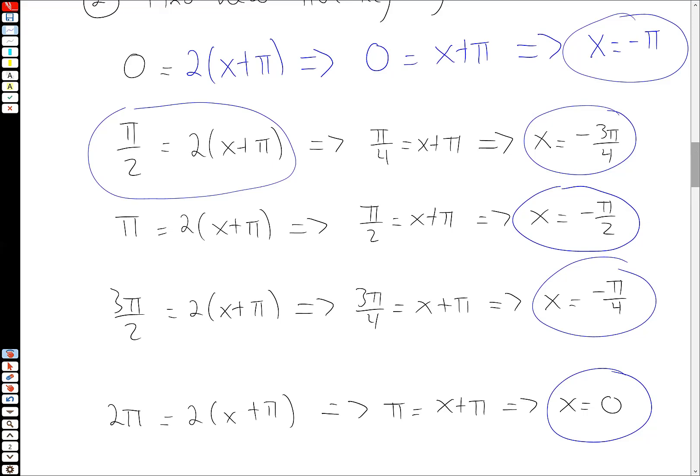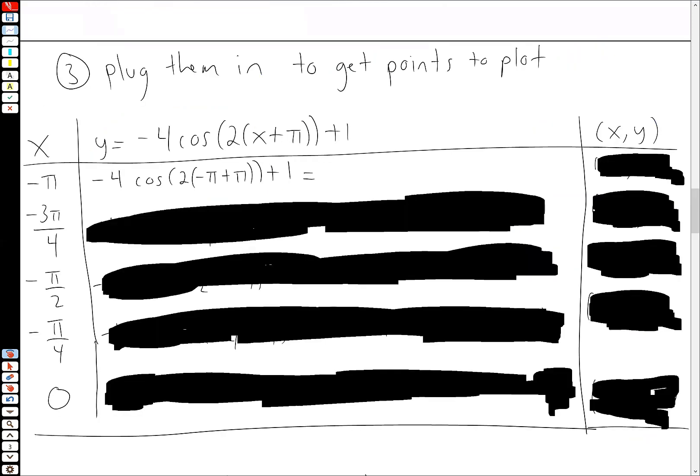So I set up a chart here for us on the very left, I have our new key angles. And then in the middle, we have the function that we're going to plug it into. And then on the right, we have the point that's going to be on the graph. So let's start by plugging in our first new key angle minus π. So if you plug that into the function, you're going to get this. Notice on the inside of cosine, the π's cancel out.